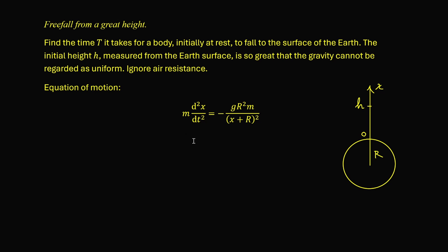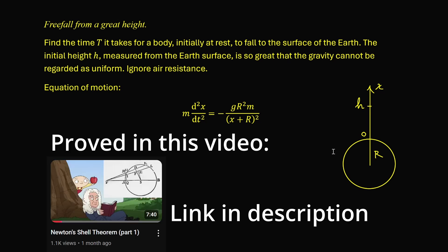We have m times acceleration, that is the second order derivative of x with respect to t, is equal to minus gr² times m over (x + r)². We have a minus sign on the right-hand side because gravity acts downwards. Here little g is the acceleration due to gravity on Earth's surface. On the denominator we have (x + r)², the distance between the object and the center of the Earth squared. So we're using the inverse square law for gravity, which assumes Earth is a spherically symmetric body.